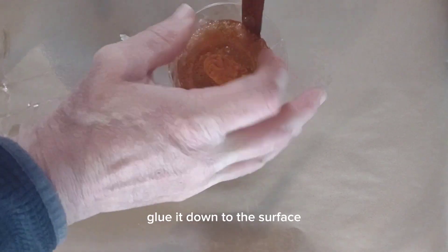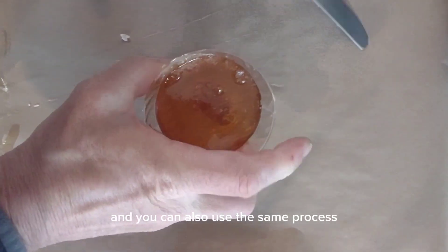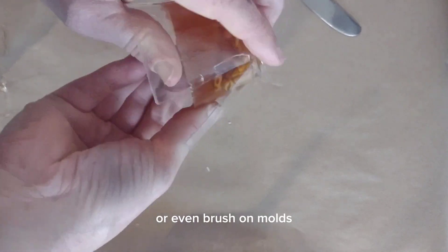If your part is going to float, glue it down to the surface. You can also use the same process for making two-part molds or even brush-on molds.